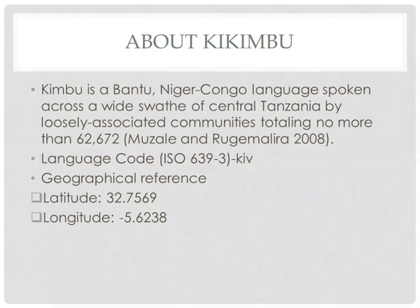Probably as we speak now, the number of speakers might be lesser than that. The ISO code for Kikimbu is KIV, and the geographical reference for this language is latitude 32.7569 and longitude negative 5.6238. Kimbu as a language is spoken in three different regions of Tanzania, and this geographical reference is for Sikonge, which is one of the districts of Tabora region in western Tanzania.